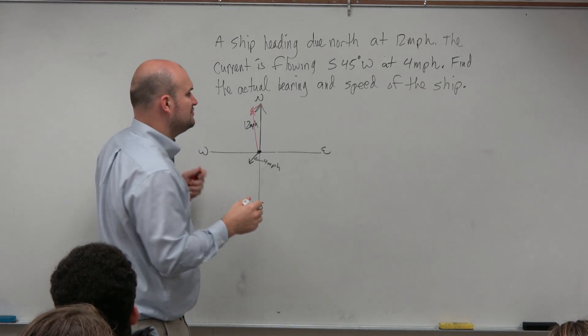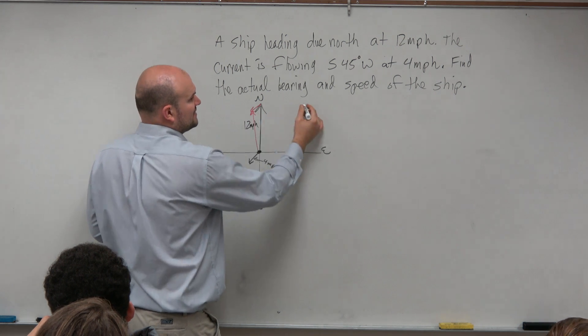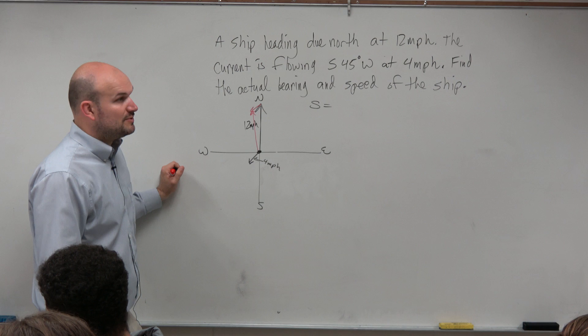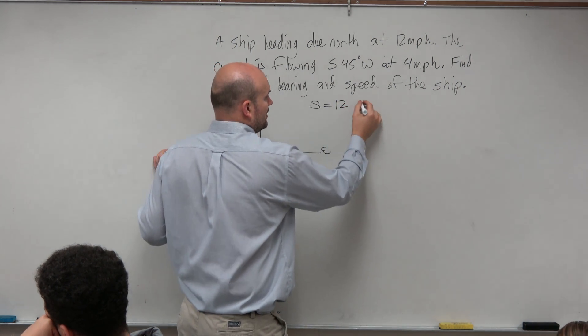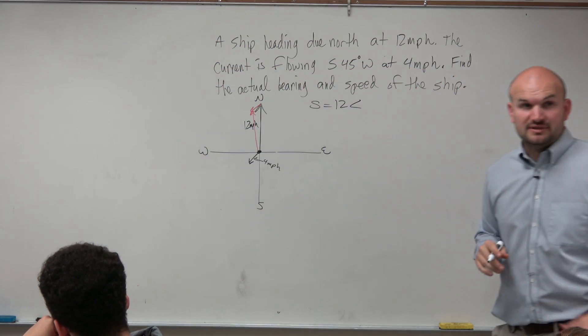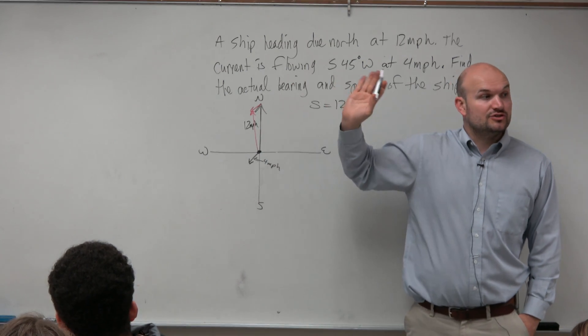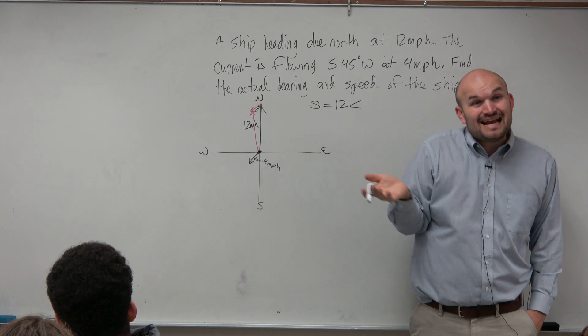So first of all, wouldn't you guys agree, though, the resultant vector? Look at what we did in class. Actually, let's write out our two vectors. So let's do a vector of the ship. Let's call that S. So the ship is we know its magnitude, which is 12 miles per hour, and we know the angle that it's flowing at. What is the angle for due north? It's 90 degrees.